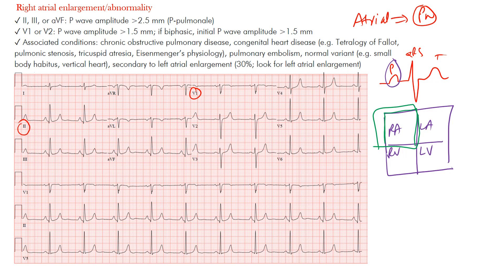For right atrial enlargement, lead 2 is the best lead, as well as V1. You can also look at the other inferior leads — leads 2, 3, and AVF. In those inferior leads, you want to see a P-wave amplitude greater than 2.5 millimeters. So the amplitude of the P-wave here exceeds 2.5mm.